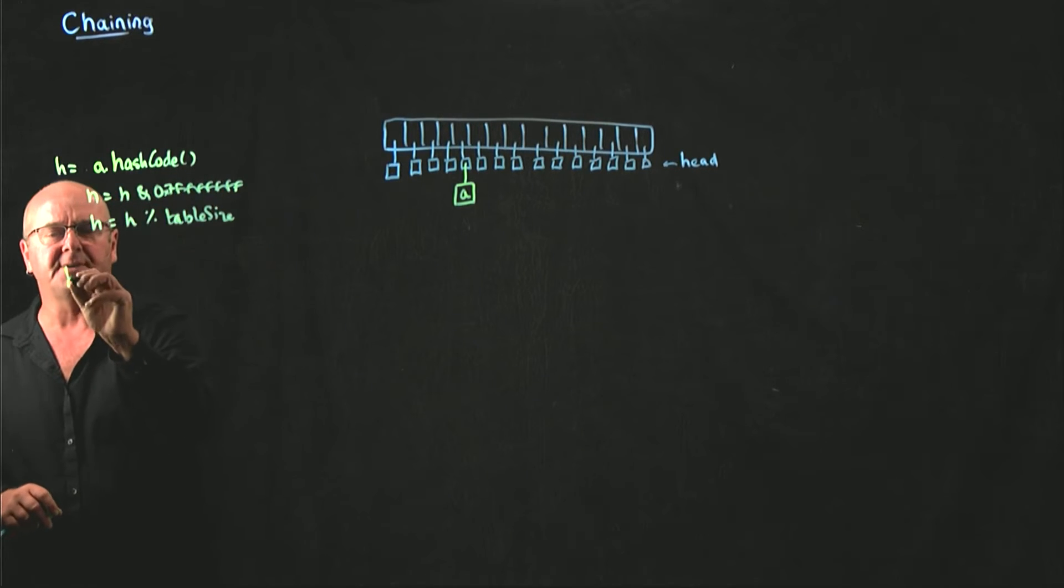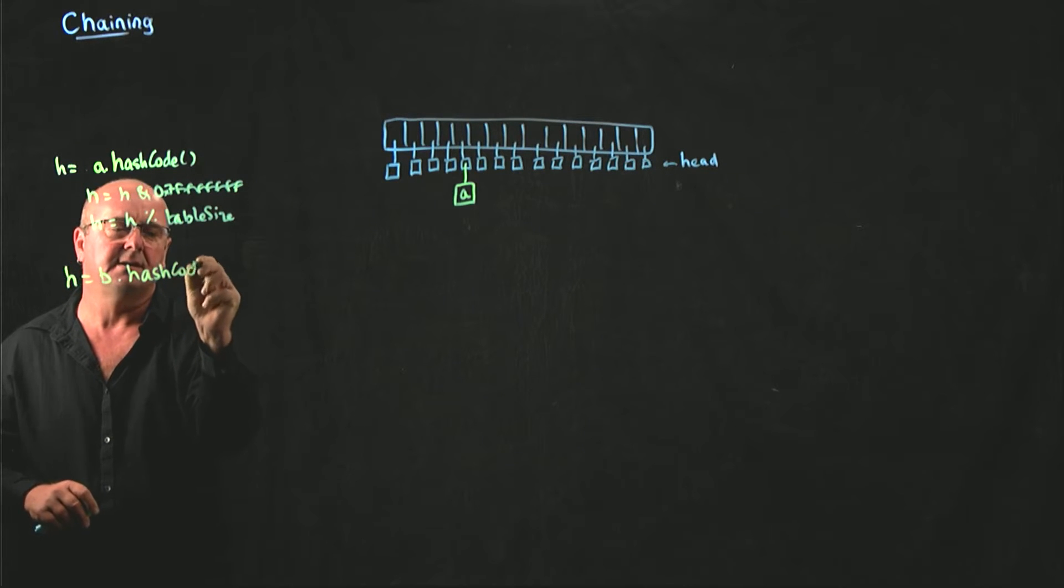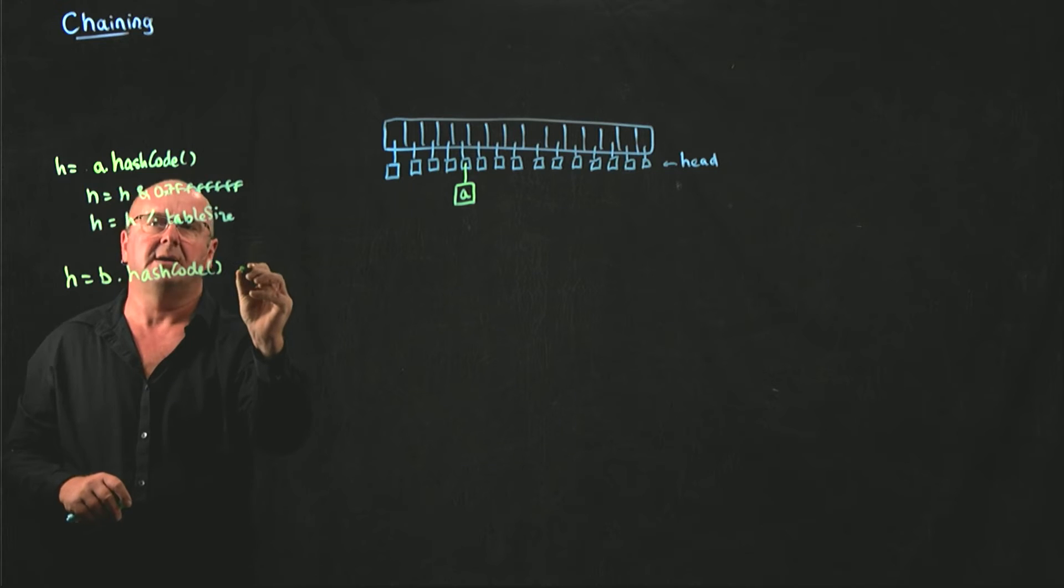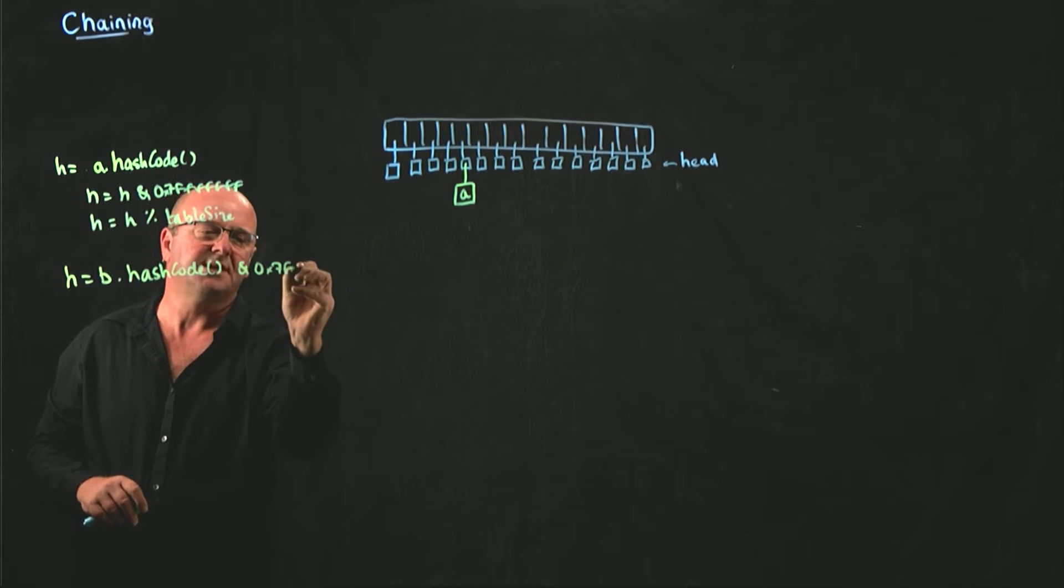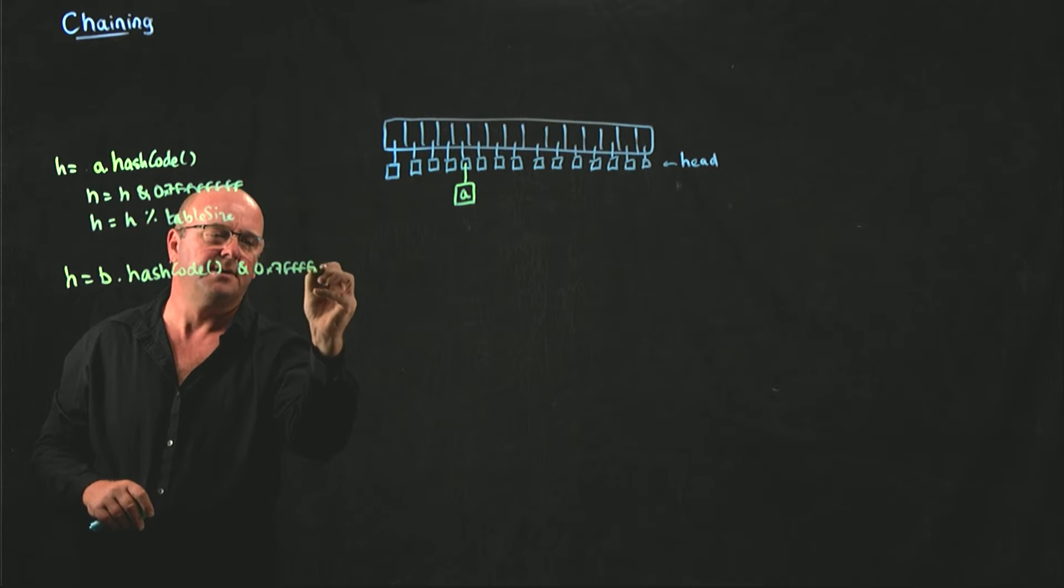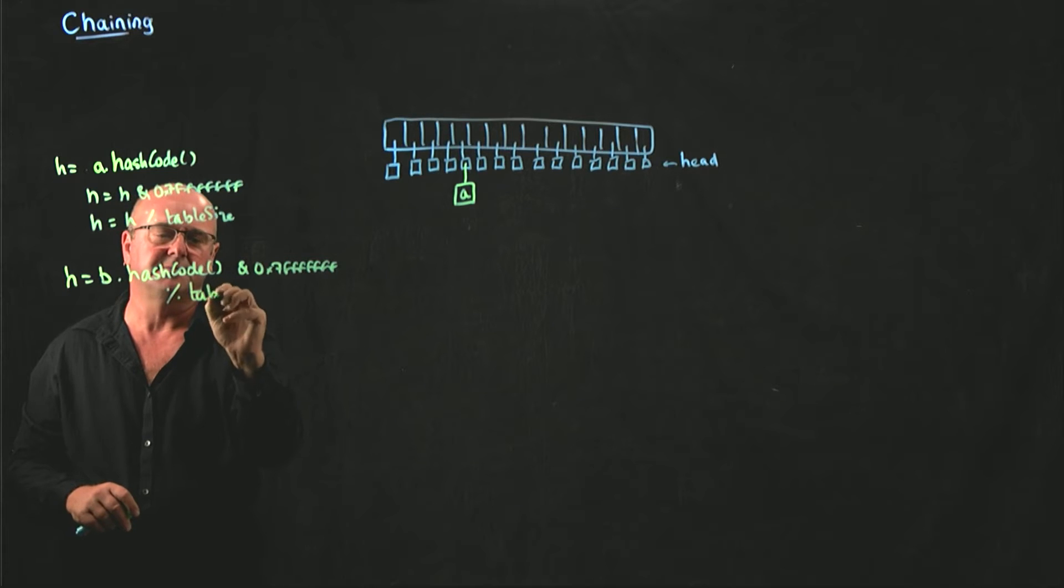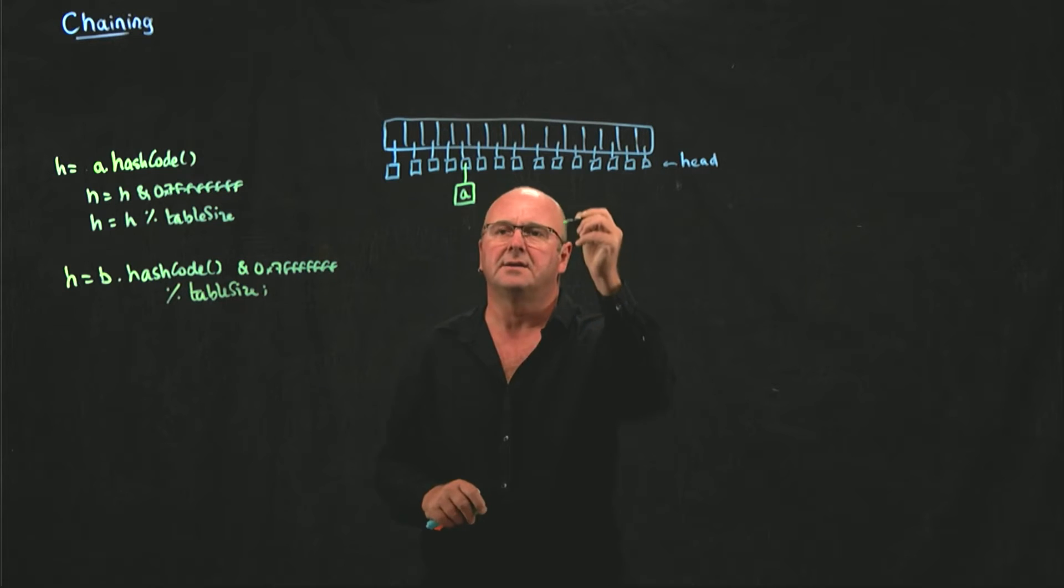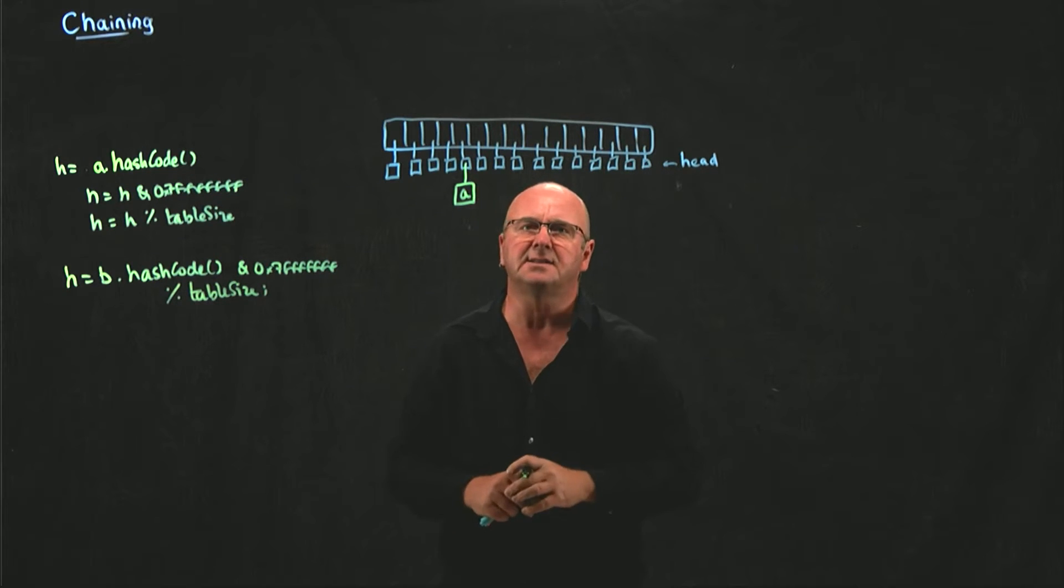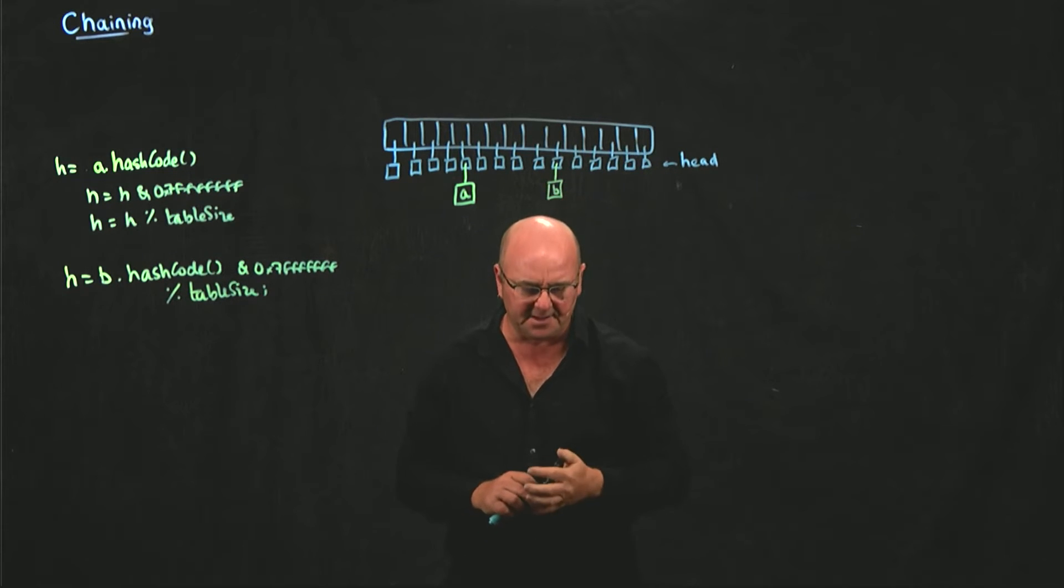Now I've got element B. I do the same thing. I take my hash code, I make it positive, I mod it on the table size. I go to my array of linked lists, I find my head node, I add my element B. I just call the add method.